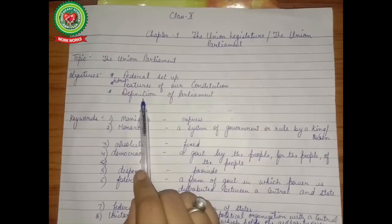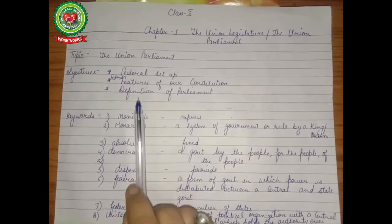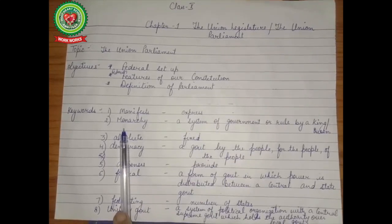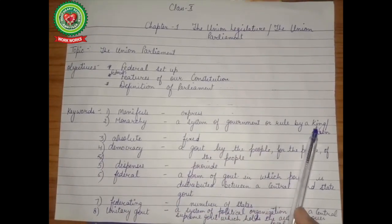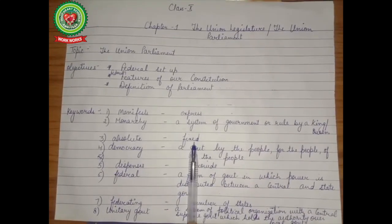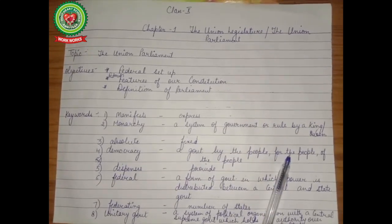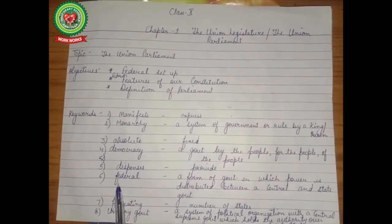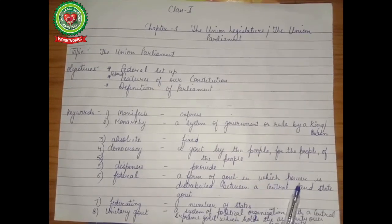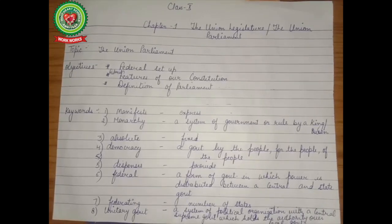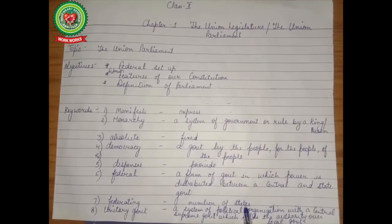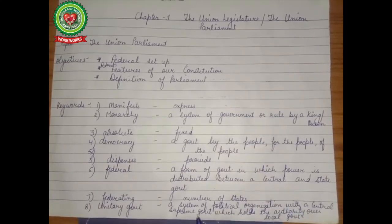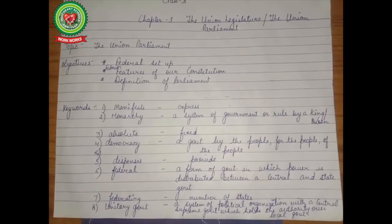Before starting today's topics, let's discuss some keywords. First: 'manifest' means express. Second: 'monarchy' means a system of government or rule by a king or queen. Third: 'absolute' means fixed. Fourth: 'democracy' means a government by the people, for the people, of the people. Fifth: 'dispenses' means provide. Sixth: 'federal' means a form of government in which power is distributed between a central and state government. Seventh: 'federating' means a number of states. Eighth: 'union unitary government' means a system of political organization with a central supreme government which holds authority over the local government.